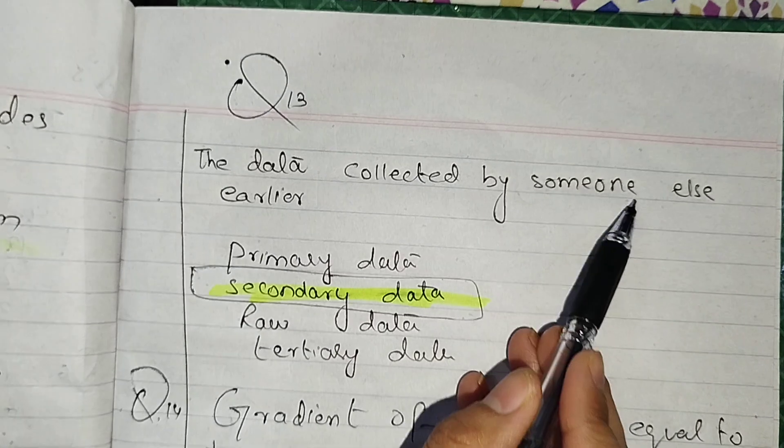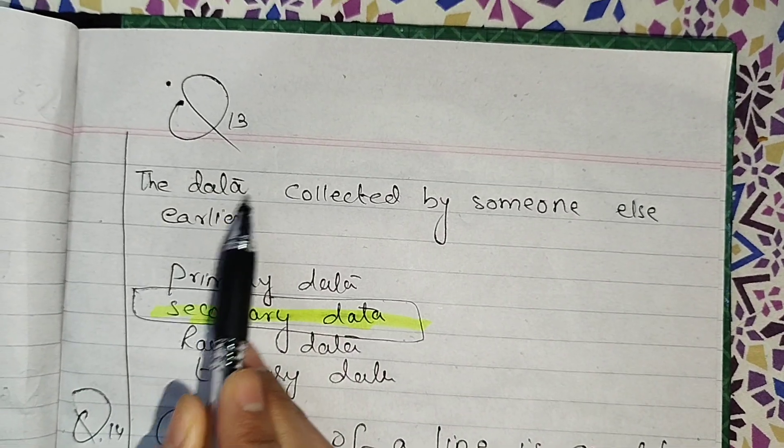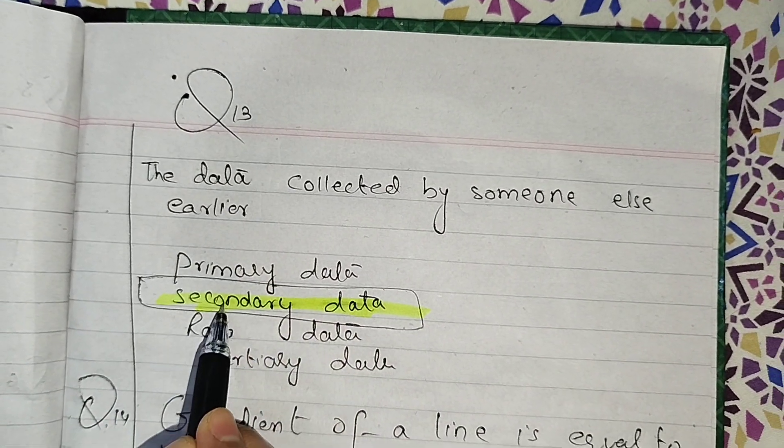Data collected by someone earlier, what do we call it? Secondary data.